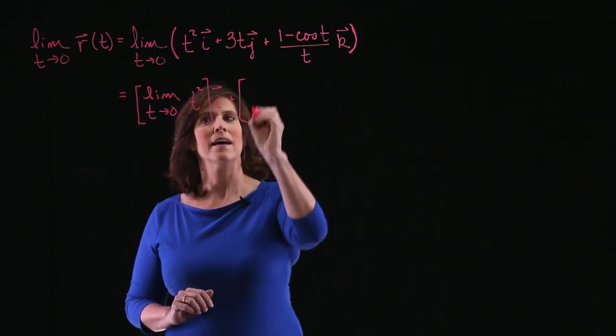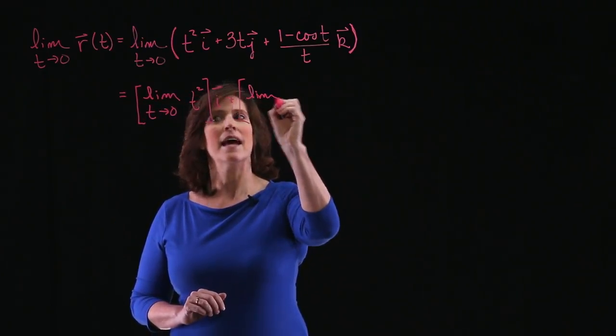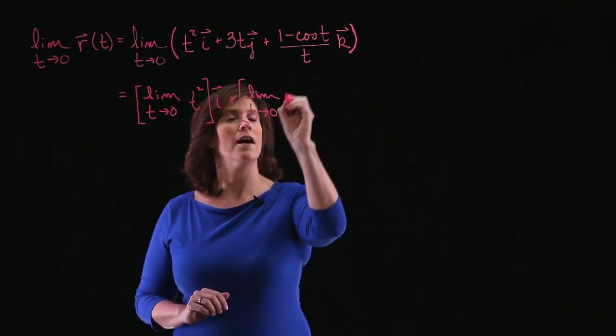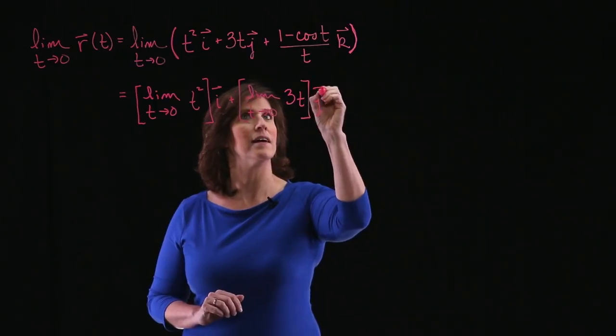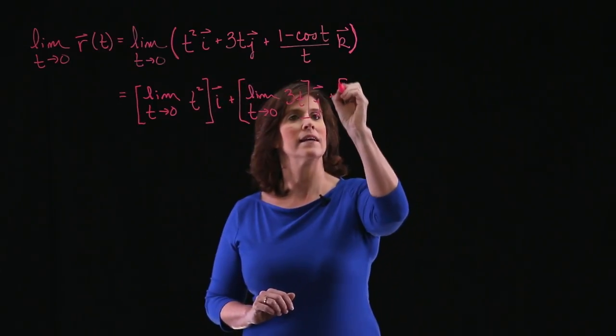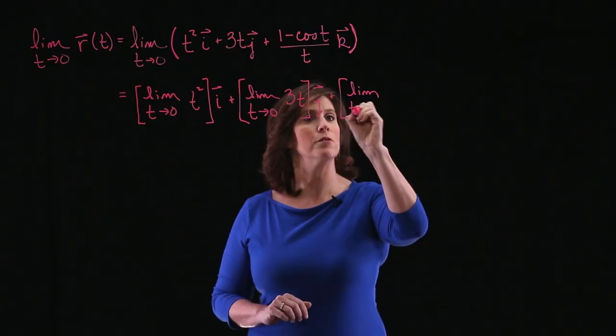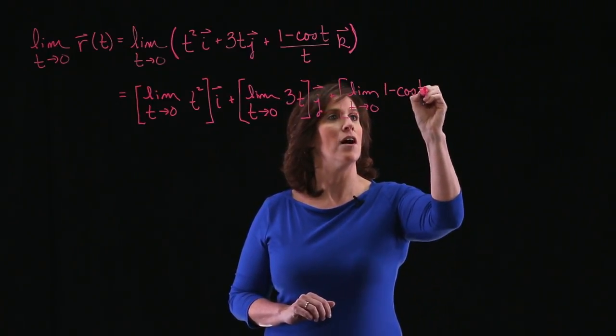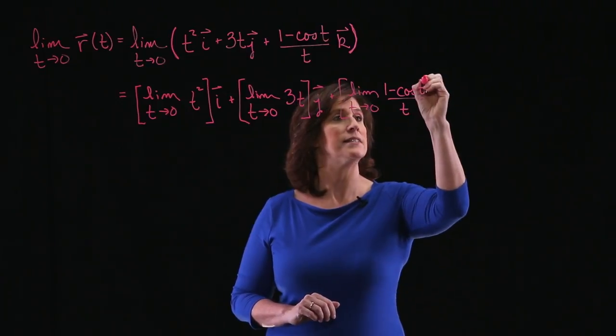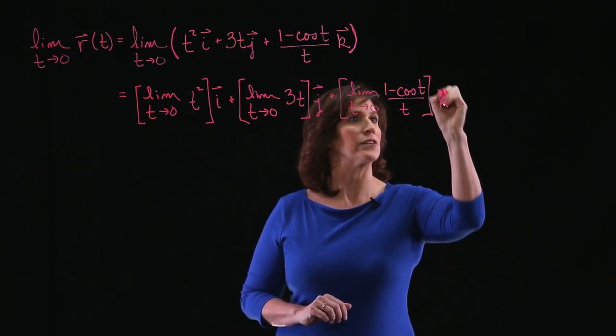And in a similar way, the limit as t approaches 0 of 3t times vector j plus the limit as t approaches 0 of 1 minus cosine t all over t times my vector k.